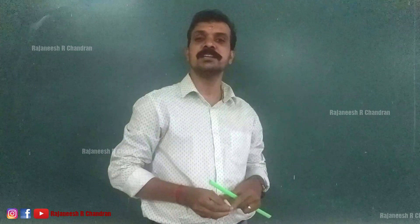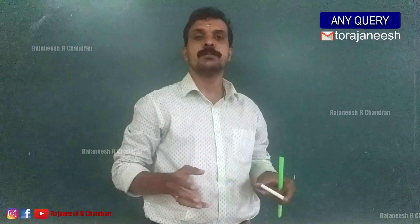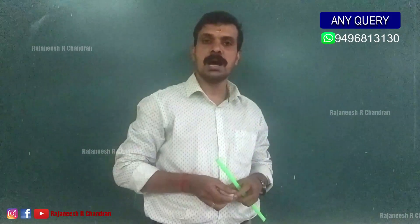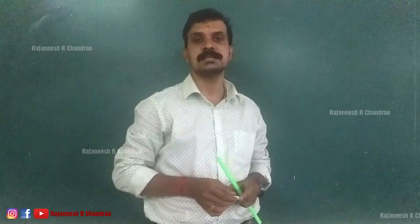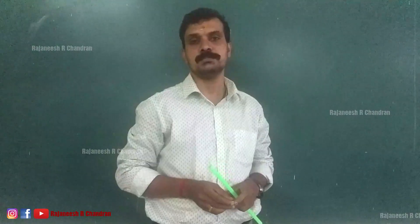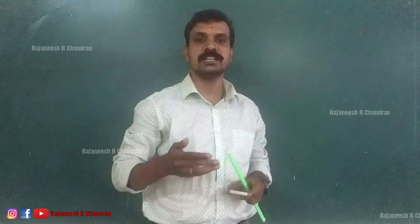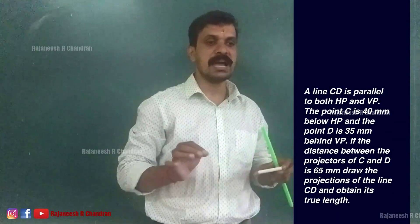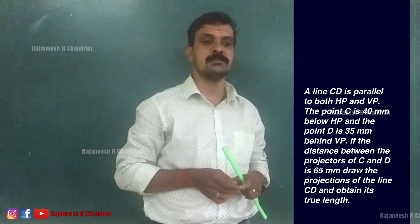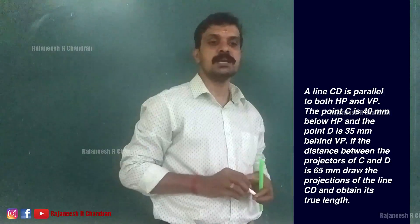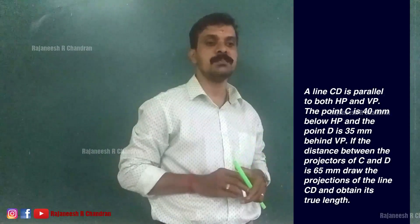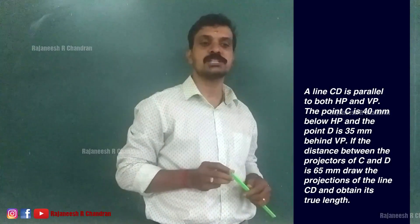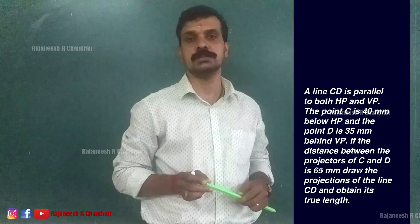Hello friends, I am Rejini Shalchandran, welcome back to my YouTube channel. In the previous video we learned about the projection of lines which are parallel to both HP and VP, and we completed an exercise related to that. Today we are going to discuss another exercise. The problem on your screen: a line CD is parallel to both HP and VP. Point C is 40mm below HP, point D is 35mm behind VP, and the distance between the projectors of C and D is 65mm. Draw the projections of line CD and obtain its true length.